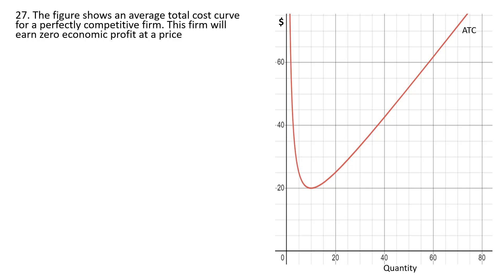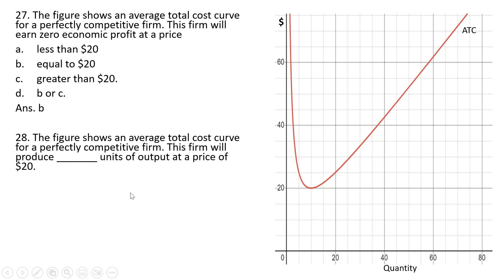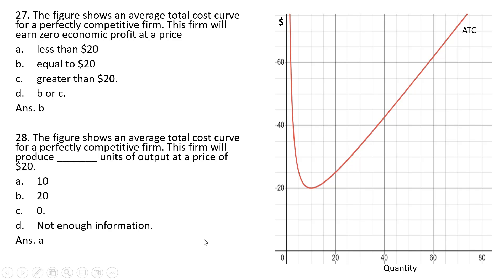Question 27: this firm will earn zero economic profit at a price when price equals average total cost—that's the minimum point on the average total cost curve, which is $20. Answer choice B. Question 28: at a price of $20, the demand curve is horizontal at $20, and marginal cost goes through the minimum of the ATC curve, occurring at 10 units of output. Answer choice A is correct.